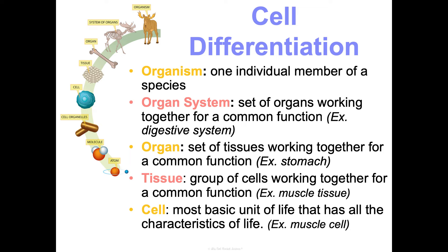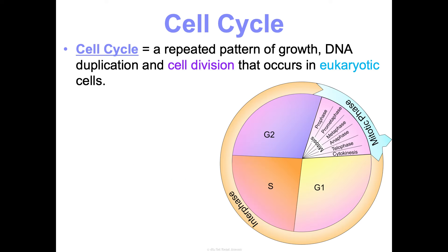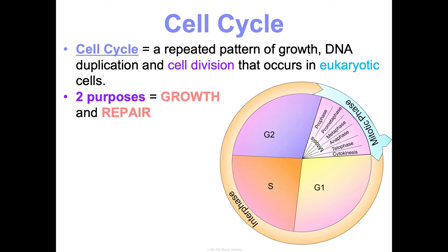Remember in cell theory, all cells come from other cells — and that's because of the cell cycle. The cell cycle is a repeated pattern of growth, DNA duplication, and cell division that occurs in eukaryotic cells. It applies to plants, animals, fungi, and it has two purposes: growth and repair. You are made of trillions of cells, not just 10 cells that have gotten bigger as you've gotten older.